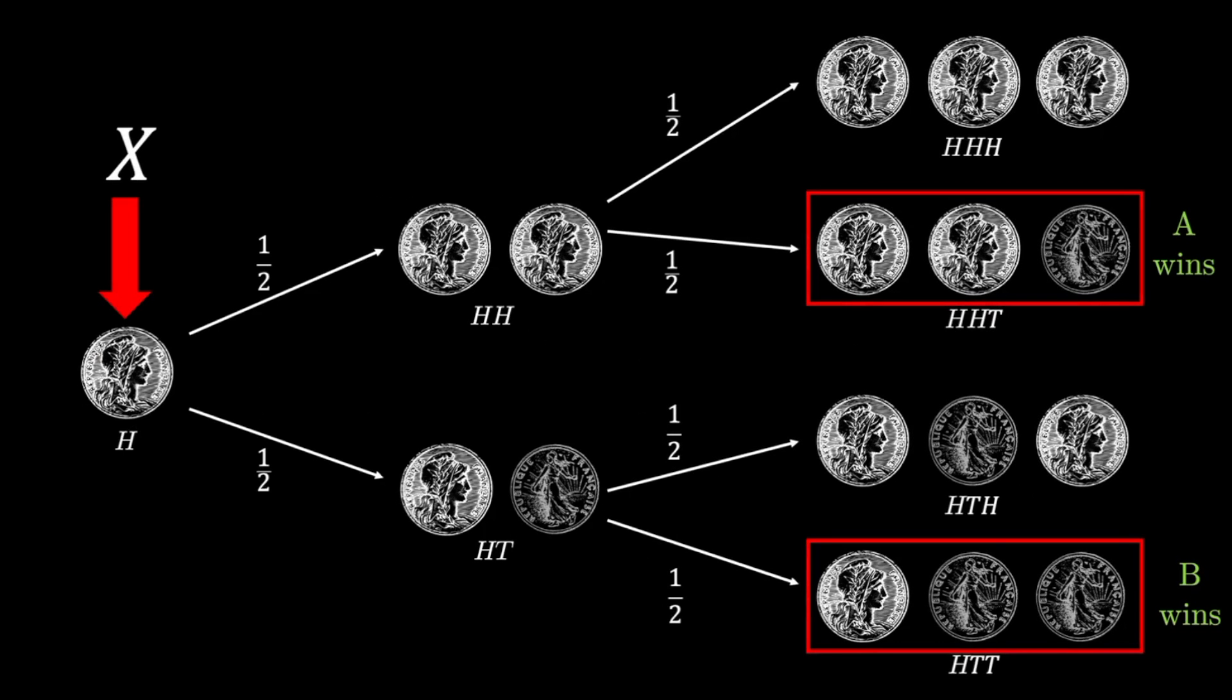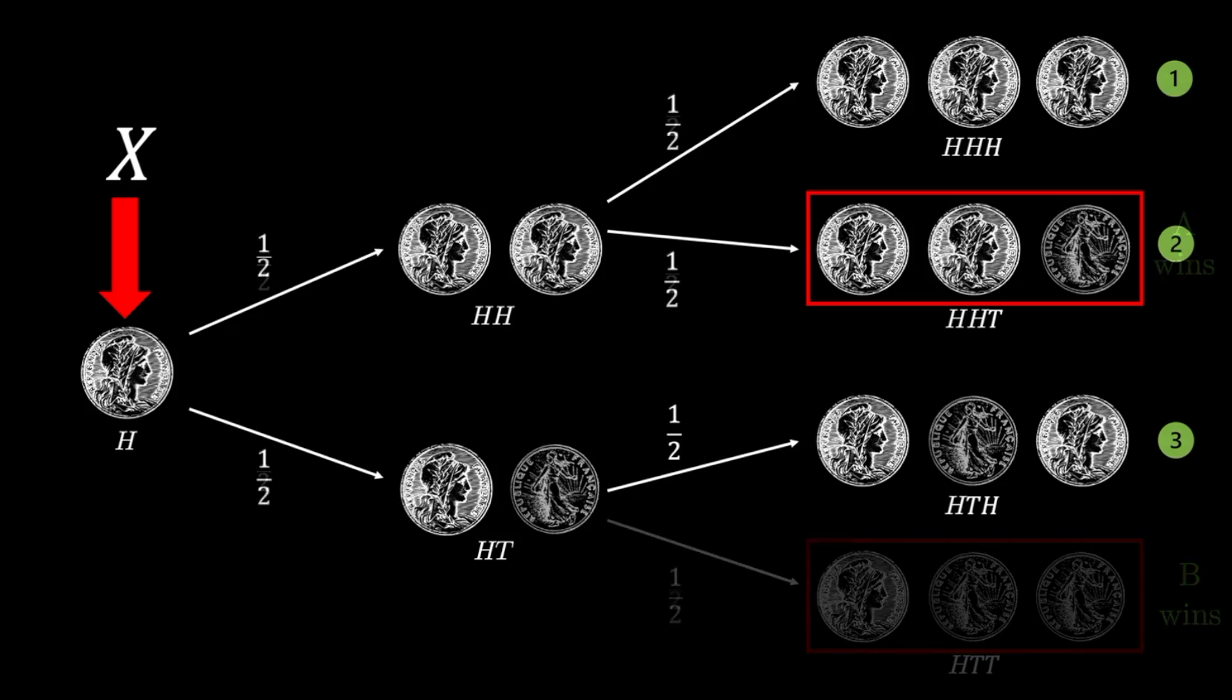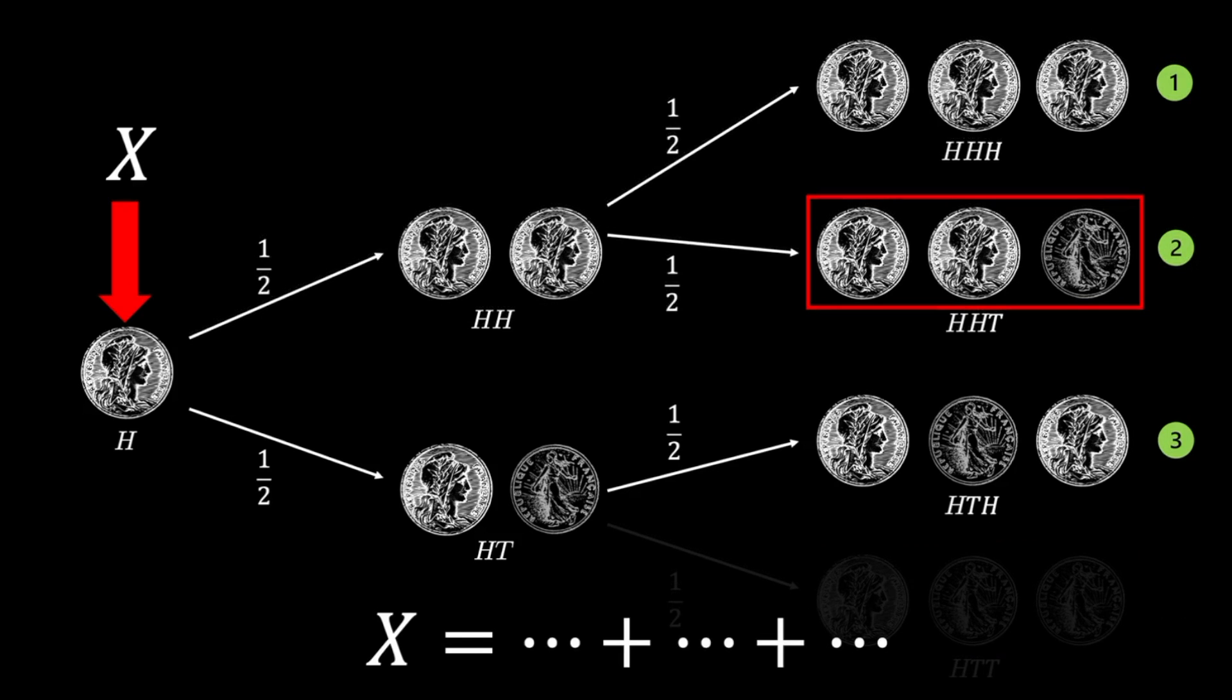Let X be the probability of A winning from this first hit. Since we are only concerned about A winning, we can ignore the last branch that ends with B winning. X then is likely represented by the probabilities of the remaining paths.